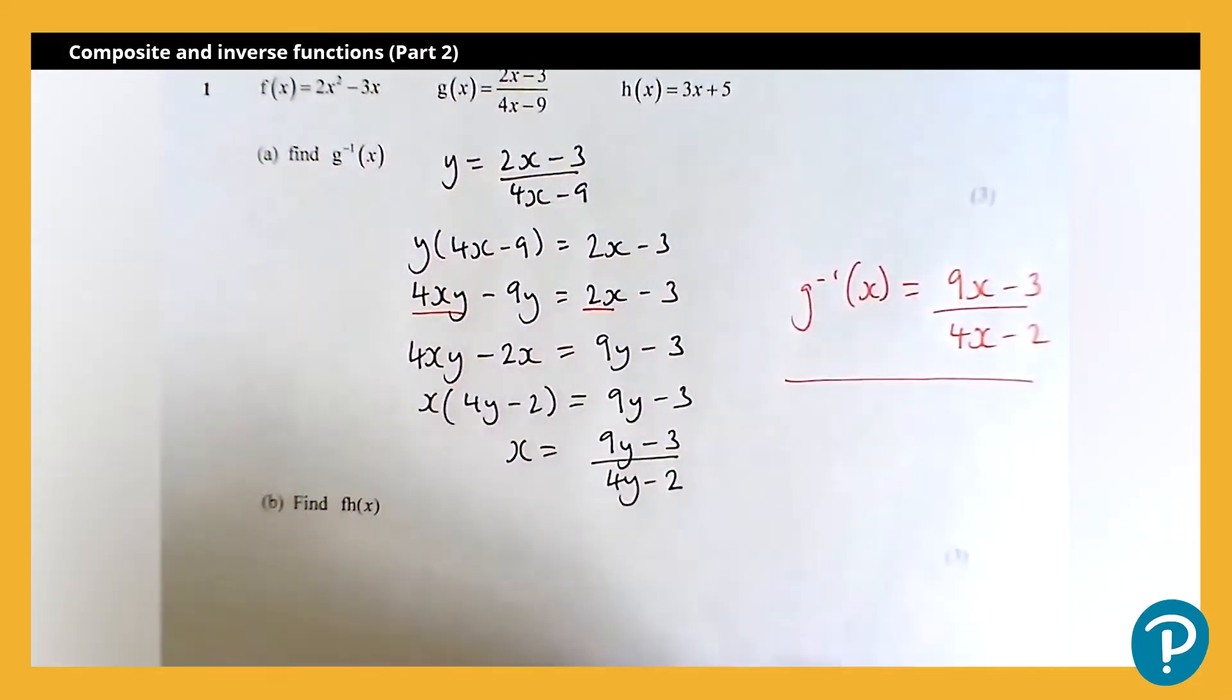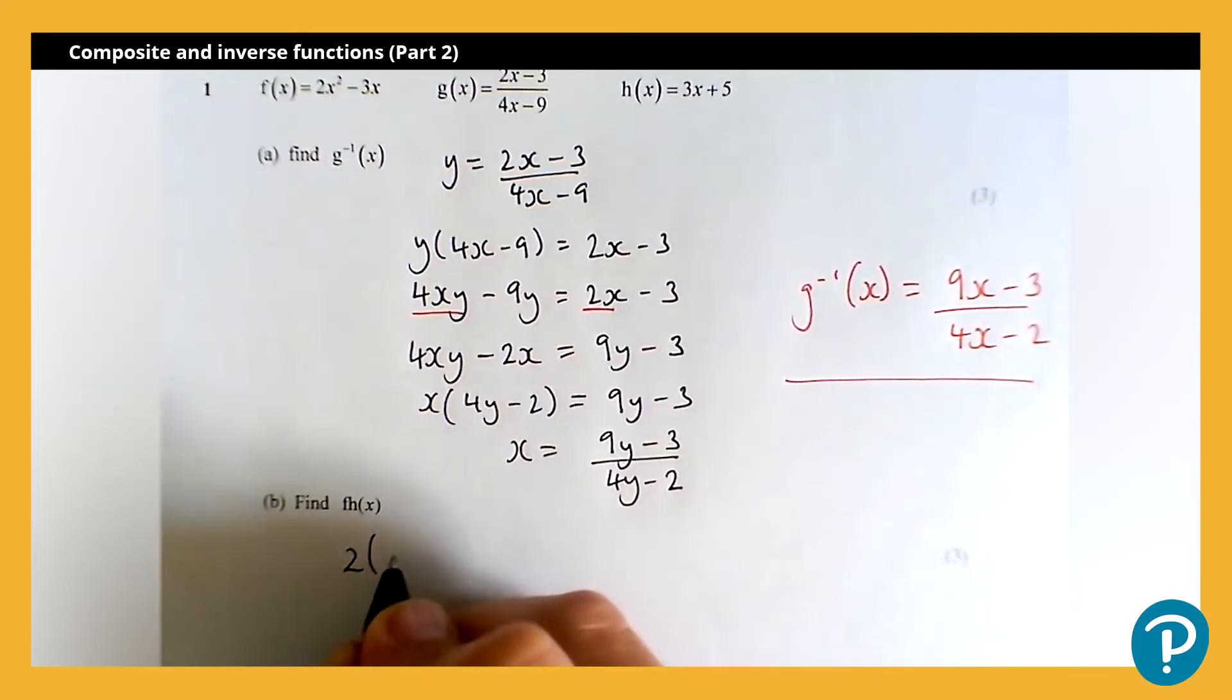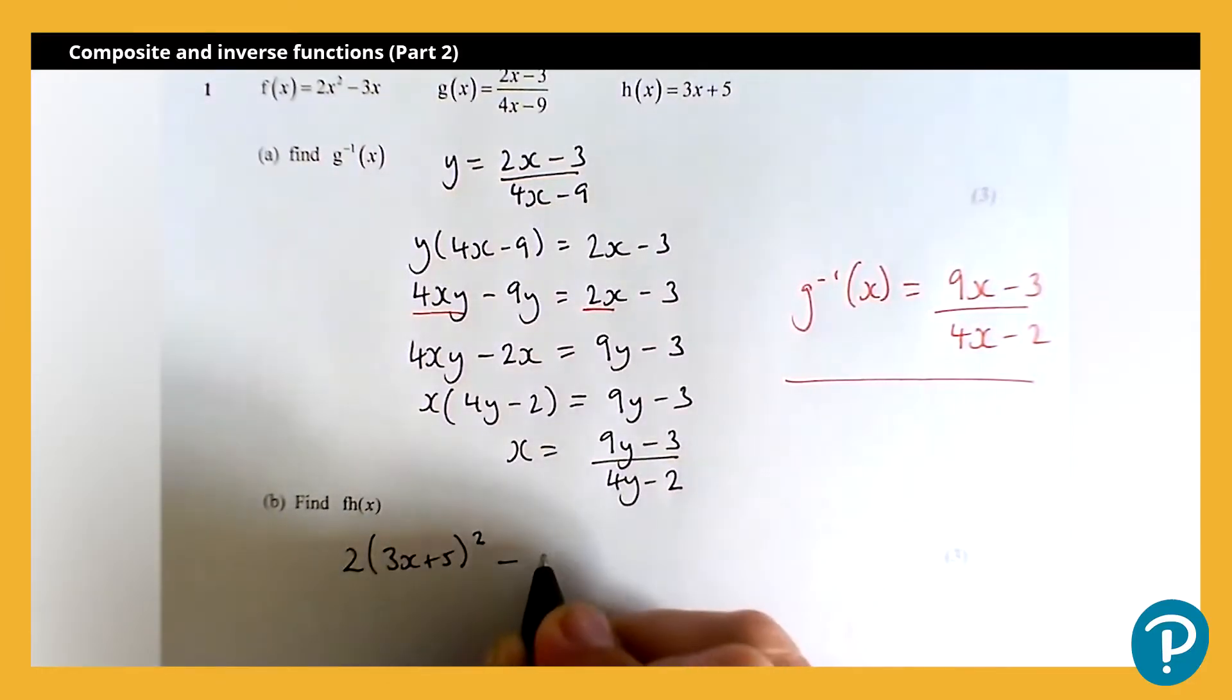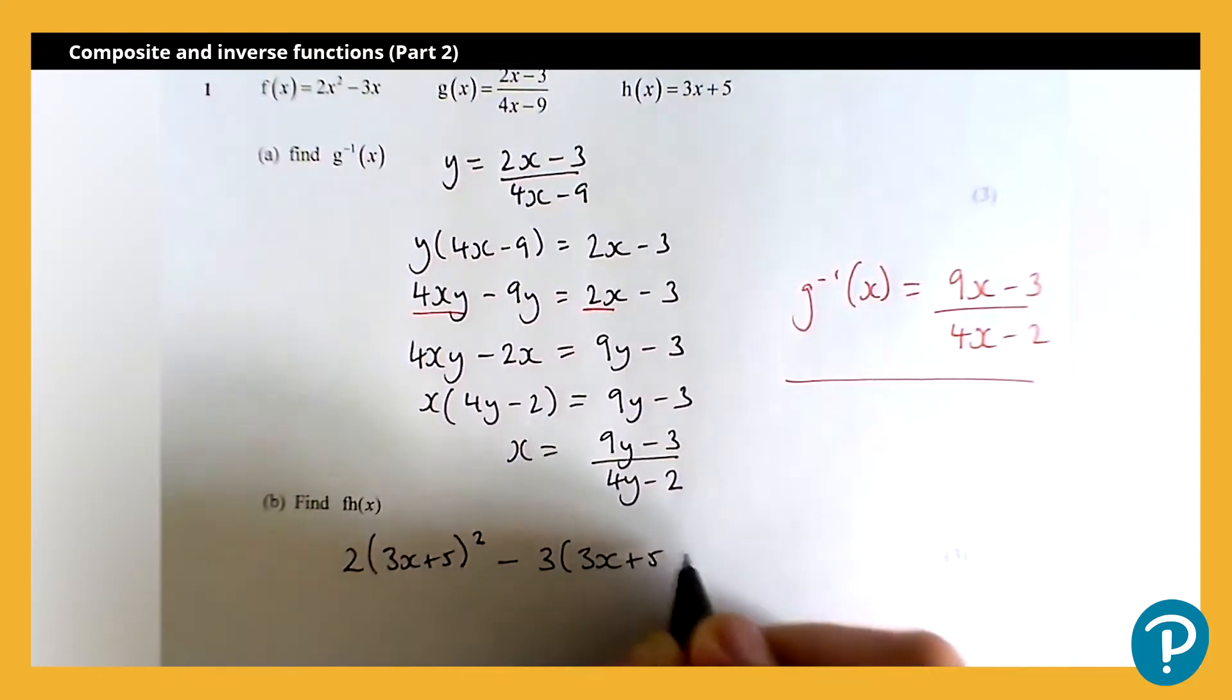So if we write that out, first of all, so I'm going to have two, then three x plus five, all squared, subtract three, three x plus five.